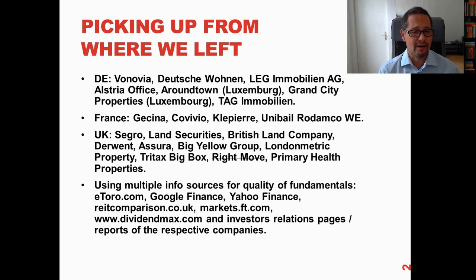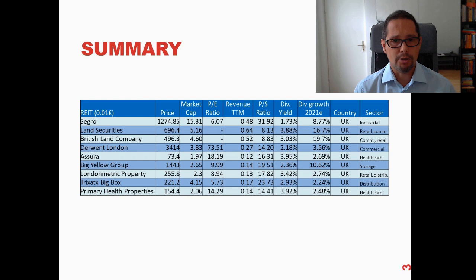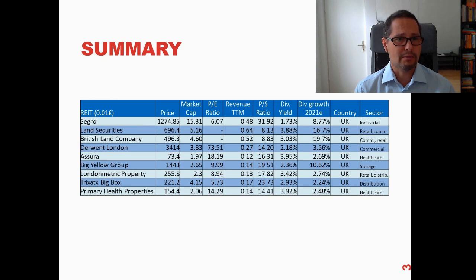Just disclosing my sources: eToro, Google Finance, Yahoo Finance, ratecomparison.co.uk, markets.ft.com, dividendmax.com, and the investor relations pages and reports of the respective companies. This is the summary of the metrics I have used. After looking at the four REITs from France, I'll consider whether to keep all of them. I'll also need to make them comparable since the German and French ones are in euros while the UK ones are in pence — 100 parts of a pound.